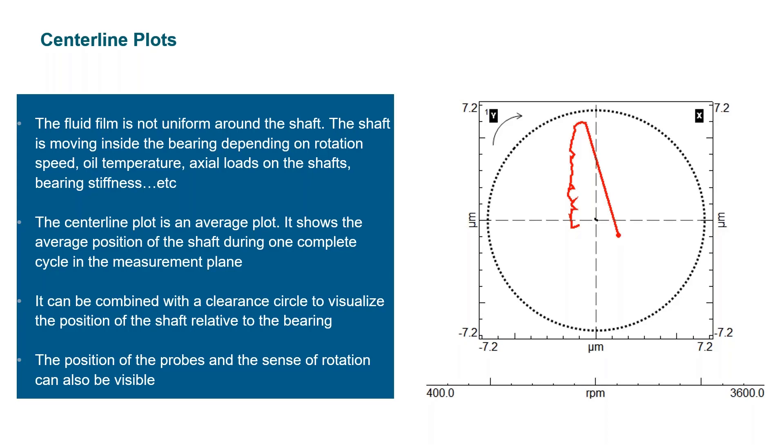If the red line would be touching the black dotted line, it would mean that we would have rub and that the shaft would be touching the bearing.